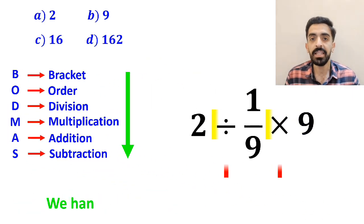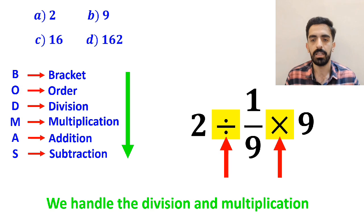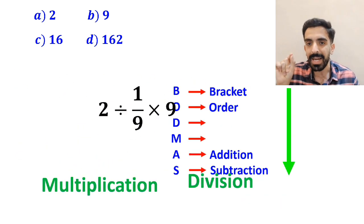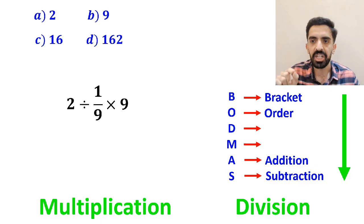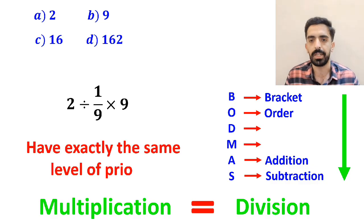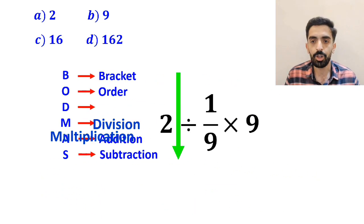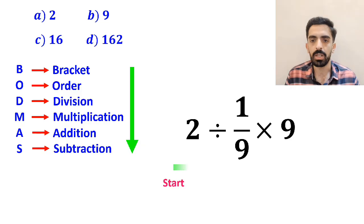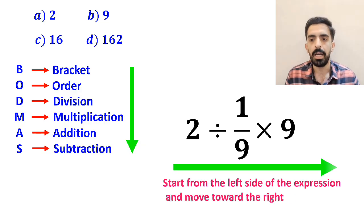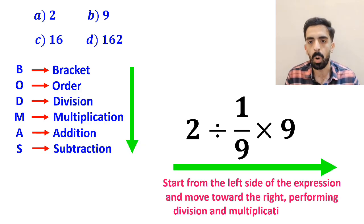In the next step, we handle the division and multiplication. However, it's very important to note that in the BODMAS rule, multiplication and division have exactly the same level of priority. In this situation, the best thing to do is to start from the left side of the expression and move toward the right, performing these two operations in order.